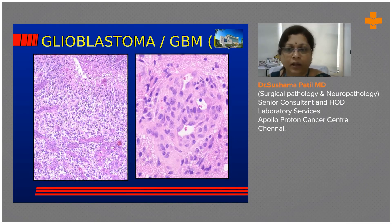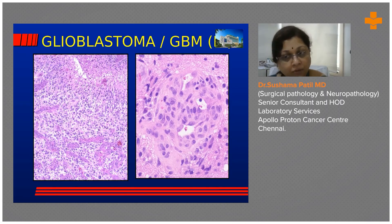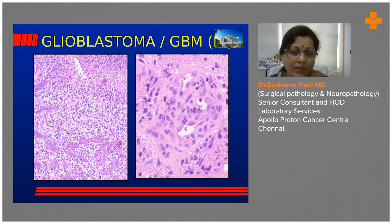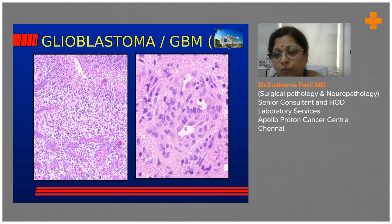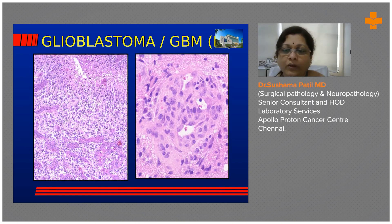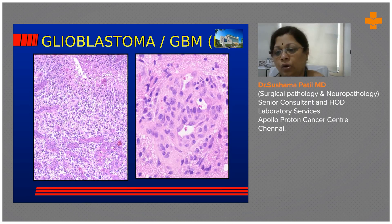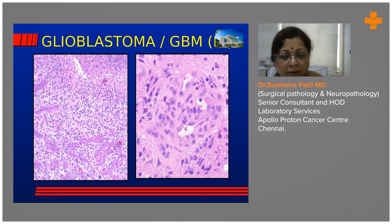Next we're coming to the glioblastomas. High grade gliomas are defined either molecularly or conventionally by the presence of endovascular proliferation and necrosis. On the right hand panel, what you're seeing in the circle — with few red cells in those empty spaces — that whole structure is endovascular proliferation, which mimics a glomerulus, so we call these glomeruloid vessels.